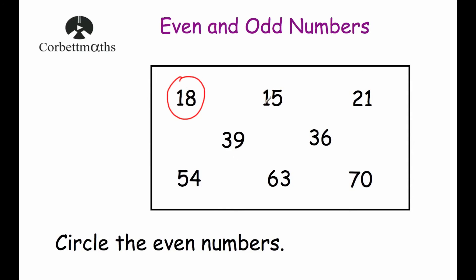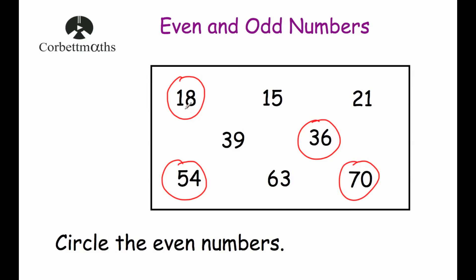15 ends in 5, so that's going to be an odd number. 21 ends in a 1, that's going to be an odd number. 39 ends in a 9, that's going to be an odd number. 36 ends in a 6, so that's going to be even. 54 ends in a 4, so that's even. 63 is going to be odd. And 70 ends in a 0, so that's even. So the even numbers to circle are 18, 36, 54 and 70.